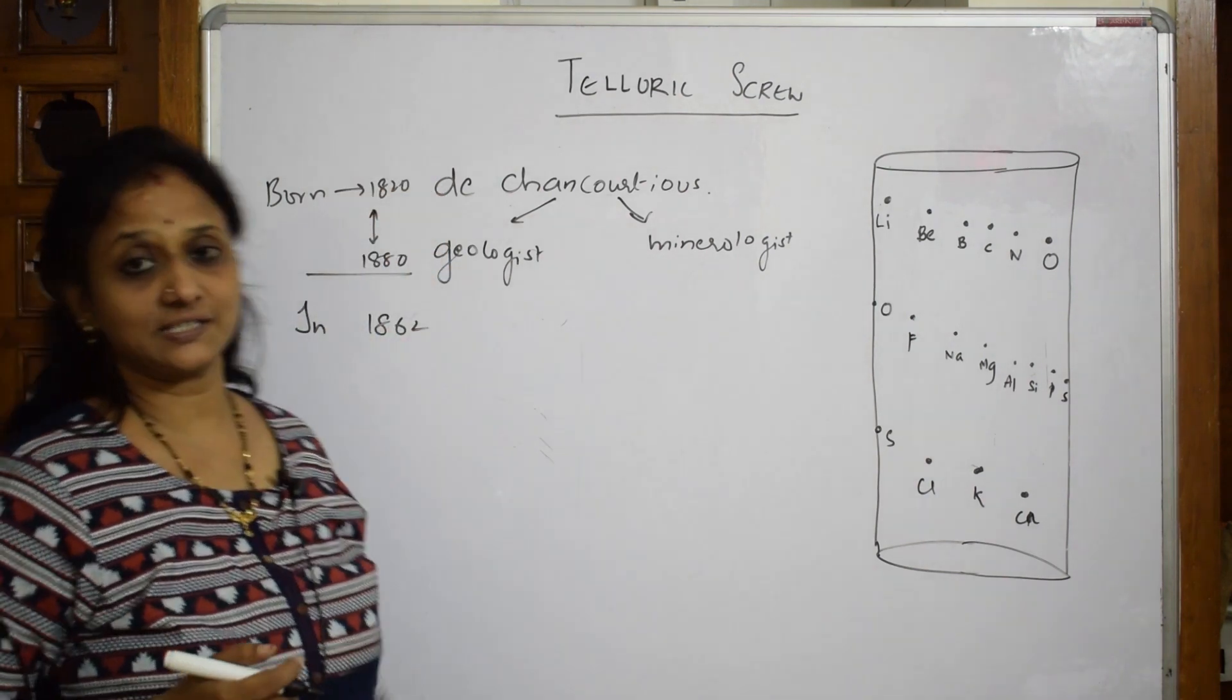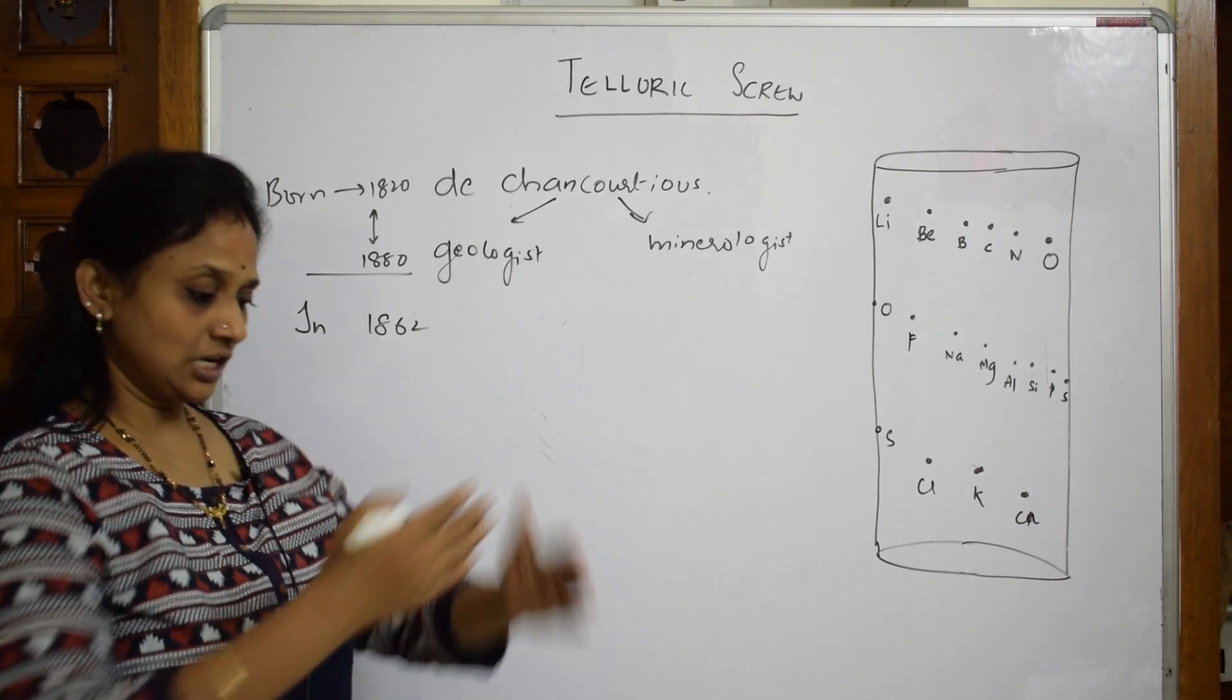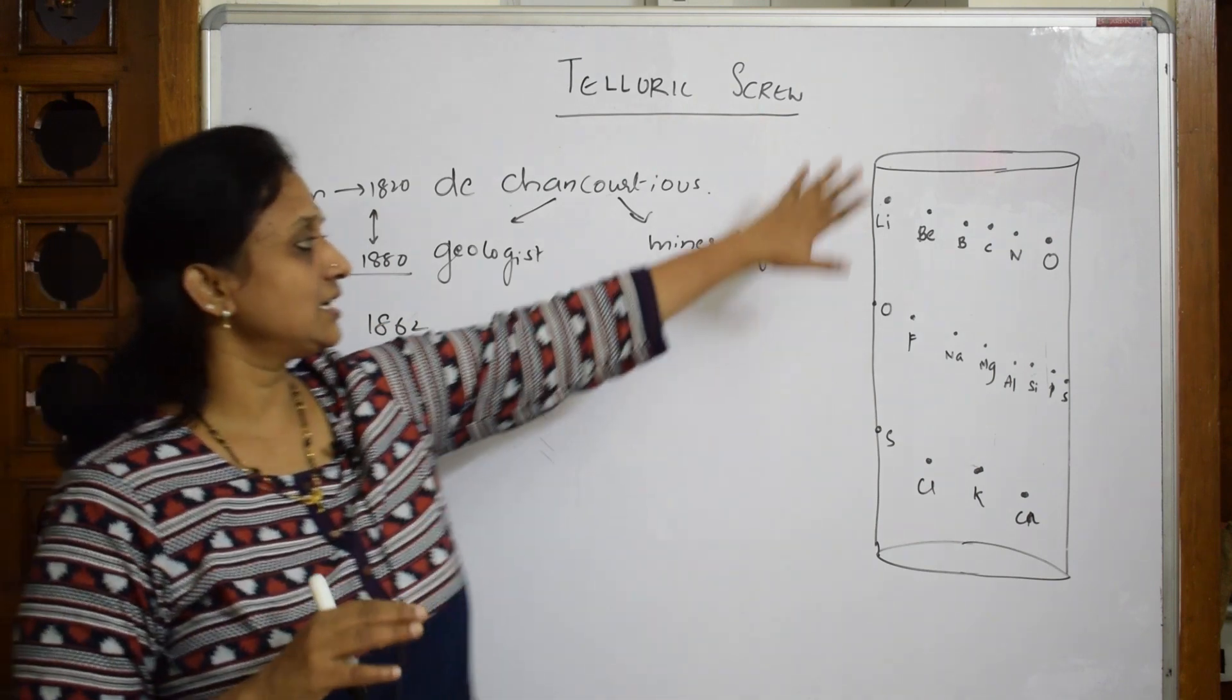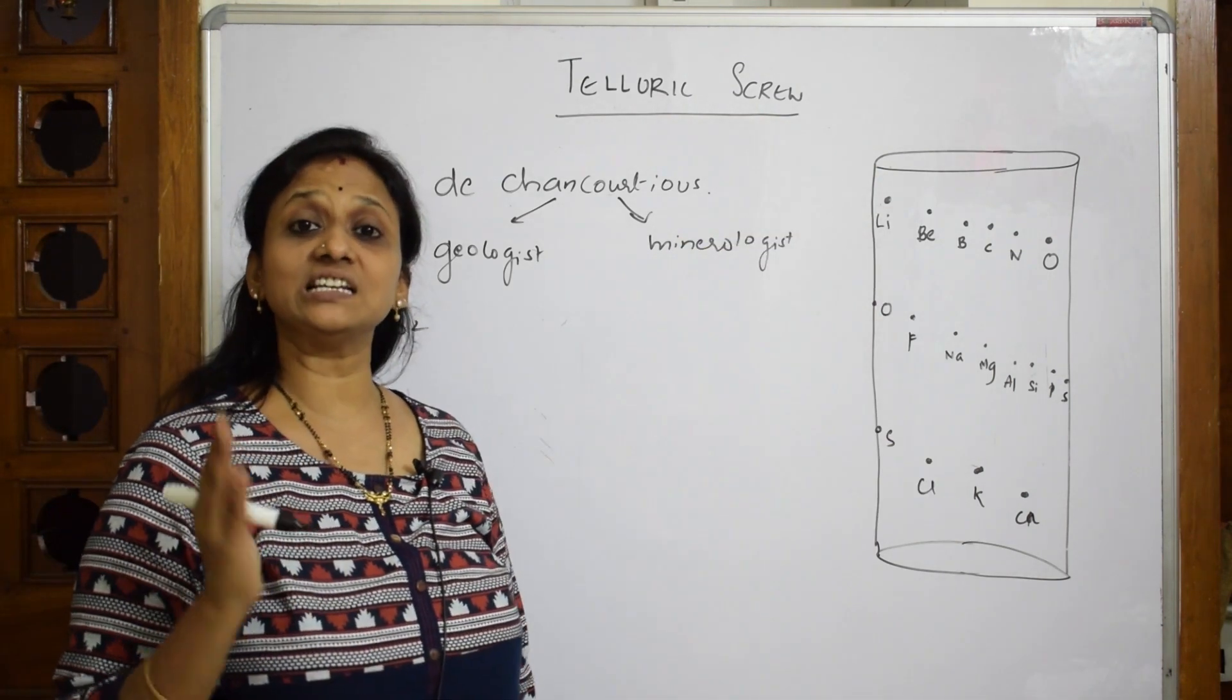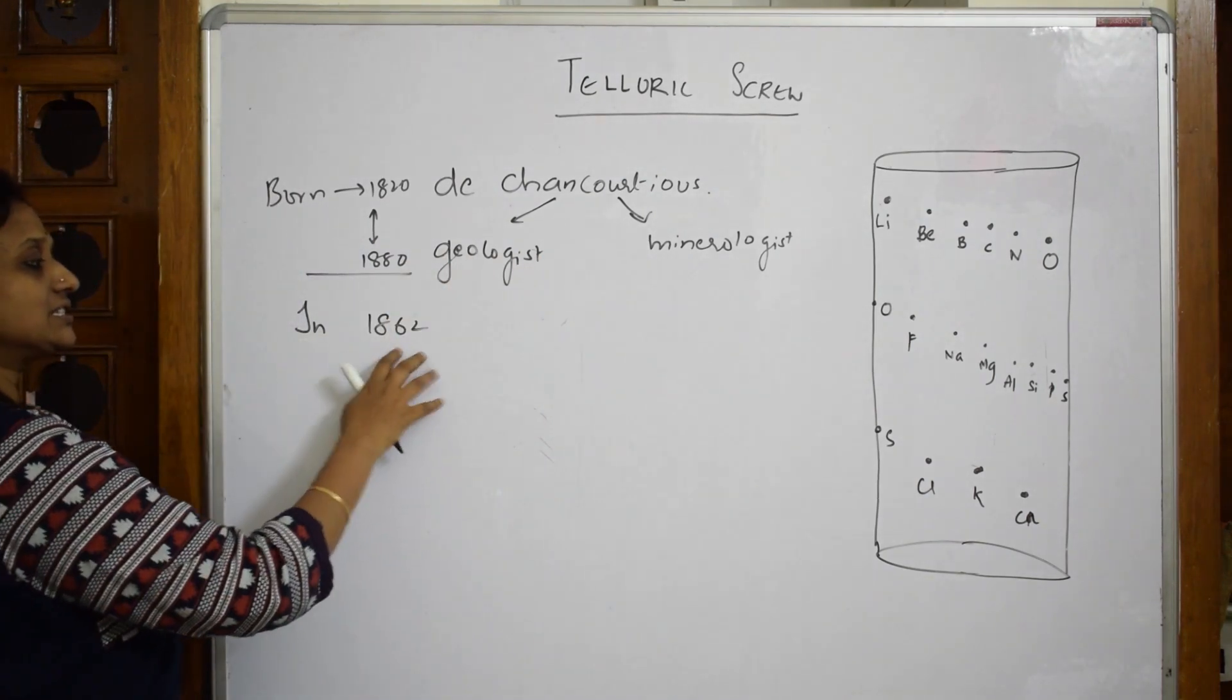He has given us this list. What I said is, he has taken the geologist's drawing white paper and he has taken that paper. Whatever elements he has discovered, he has written on the form of a cylinder. He said, this is an easy way to understand. Whatever elements, that is in 1862.